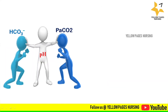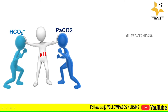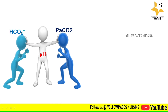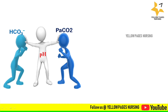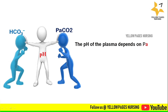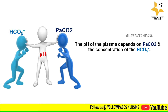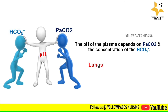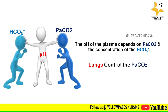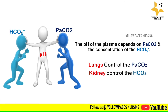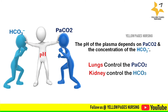A helpful analogy shows pH as a referee and PaCO2 and bicarbonate as two boxers, indicating that pH is regulated or maintained by PaCO2 and bicarbonate levels. In general, pH of plasma is controlled by bicarbonate and the partial pressure of carbon dioxide. Lungs regulate the PaCO2 and kidneys regulate the bicarbonate, and hence both lungs and kidneys help maintain the normal level of pH.